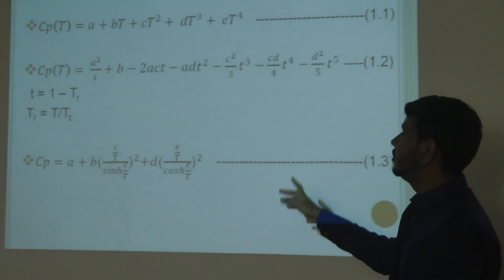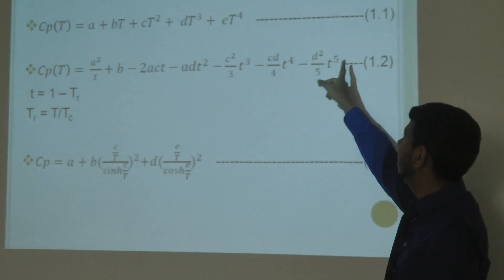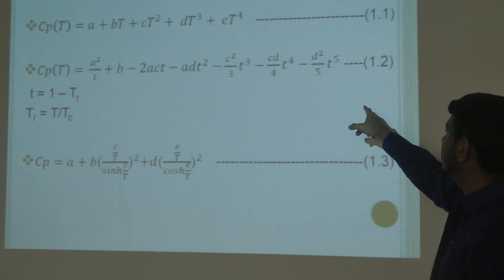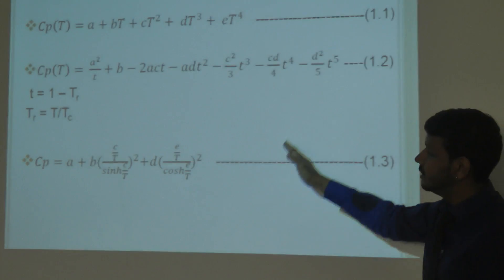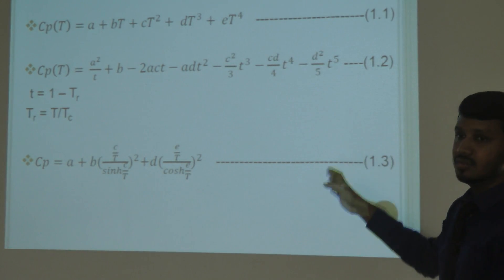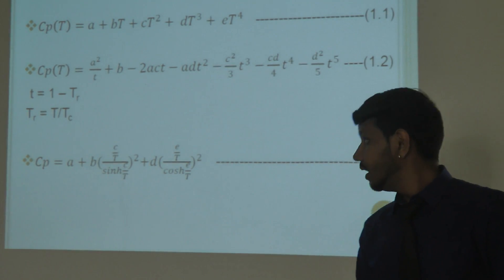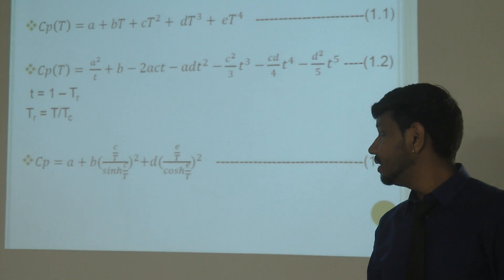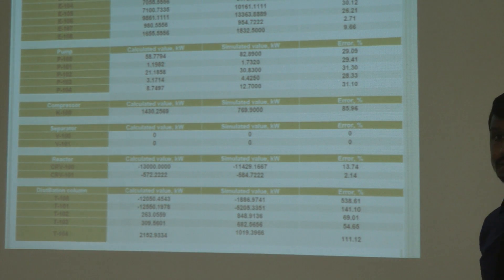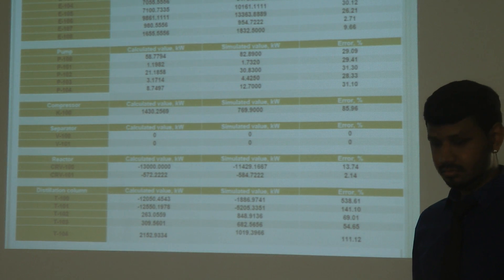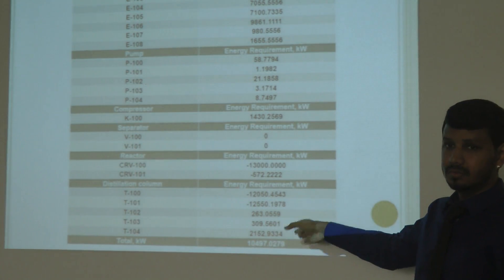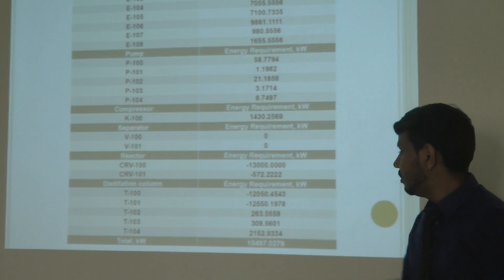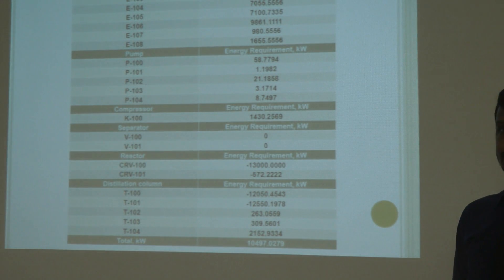For the energy balance, we used two equations: Equation 1.1 is used for most material components, and Equation 1.2 is used for specific materials — heptane, hydrogen, and hydrogen sulfide. These apply to liquid phase; a separate equation is used for the gas phase. The A, B, C, D constants are taken from the Perry's Chemical Engineers' Handbook. We used HYSYS to develop the energy balance for major equipment. Based on manual calculation, we need about 10,497 kW of total energy input.